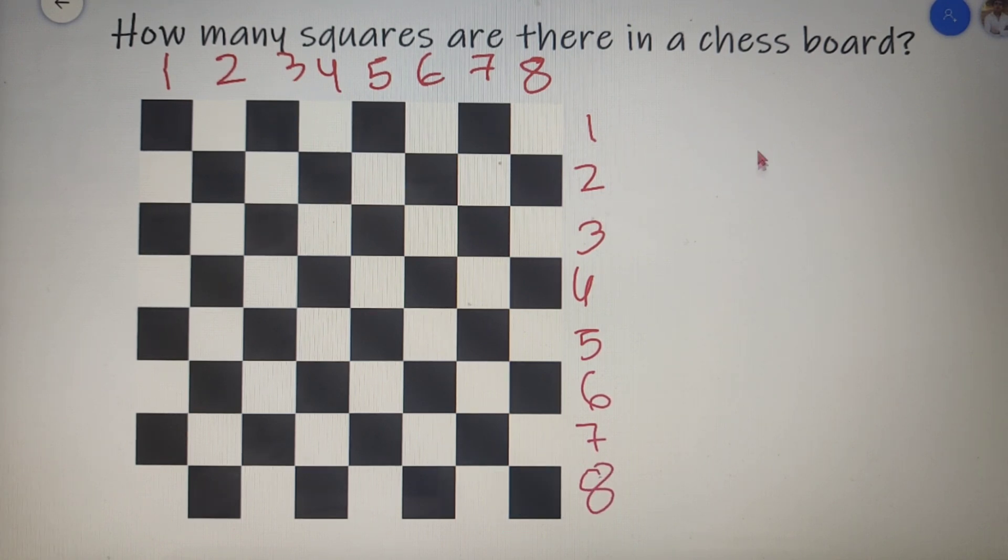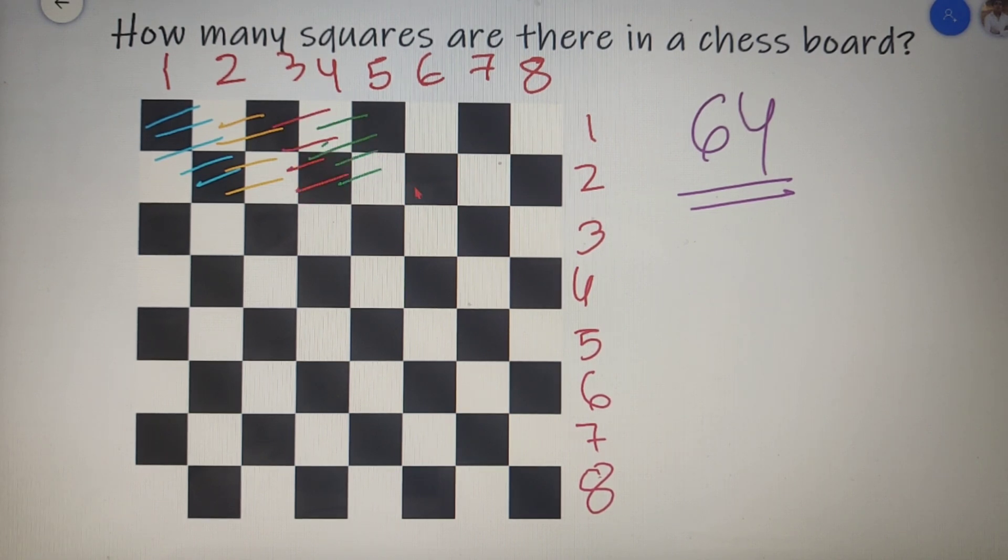So till now we know that there are 64 squares of size 1 cross 1 and let's find out how many squares are there of size 2 cross 2. If I select this first four small squares then I can say that I've got a square of size 2 cross 2. Now this will also be a square of 2 cross 2. Same for this case. This will also be a square of 2 cross 2.